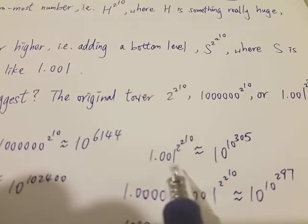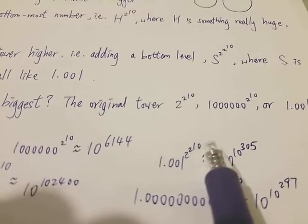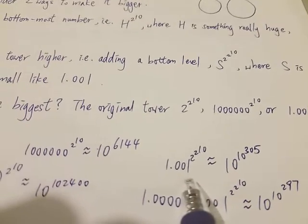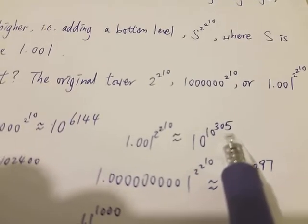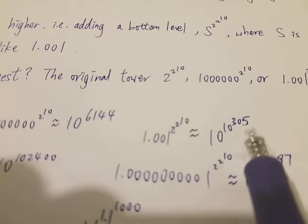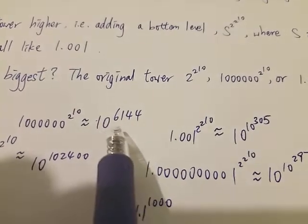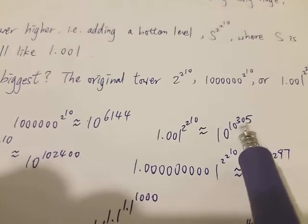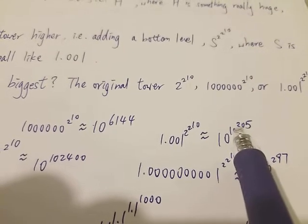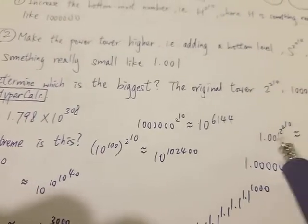But what about the 1.001 version? Before we do any calculation, most people would say this number is very small because the base is very close to 1, and 1 to any power is just 1. But if you think so, you're wrong. Using HyperCal, we get the result of 10 to the 10 to the 305. This number — 10 to the 10 to the 305 — is much bigger than 10 to the 6,144. 10 to the 305 means a number with 306 digits, while 6,144 only has four digits. Very weird properties with a power tower.